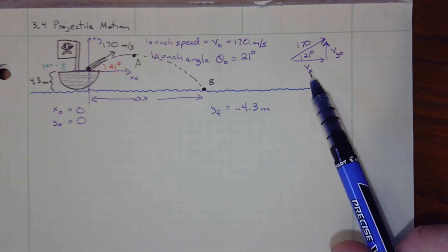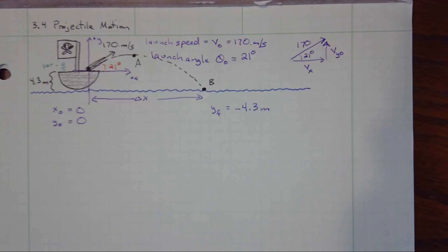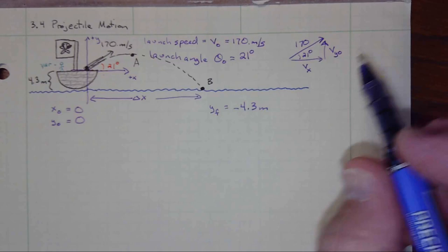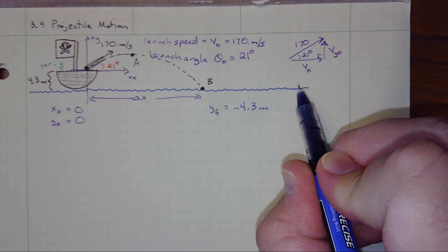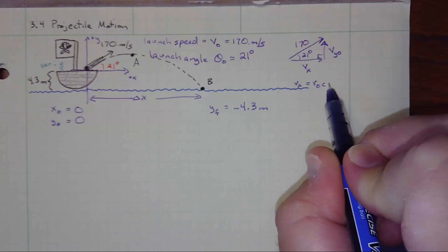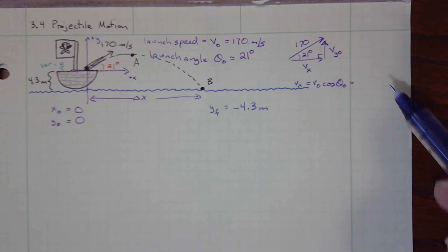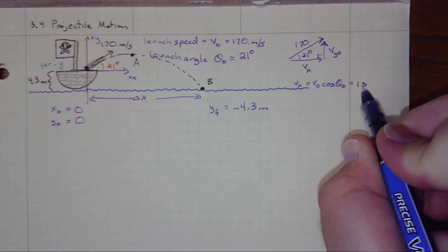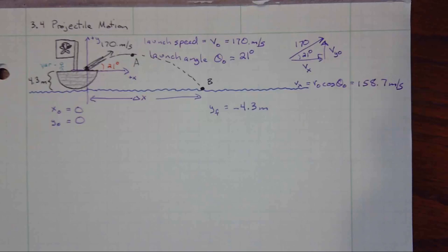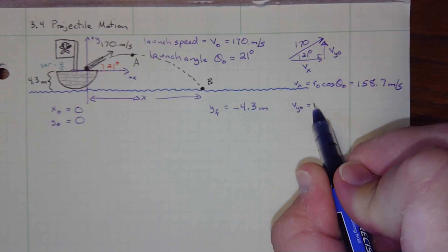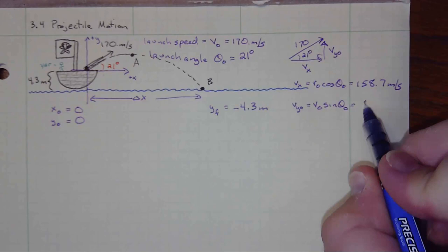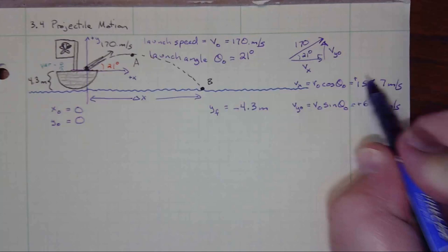Because we've defined this angle relative to the horizontal and have the magnitude, we can use trig to write down our components. We get that vx equals v₀ times cosine of theta₀, so 170 times cosine of 21, which gives 158.7 meters per second — I'll keep some extra significant figures for intermediate values. Then vy₀ equals v₀ times sine of theta₀, which gives 60.9 meters per second. Both of these are positive because the velocity is pointing in the positive x and positive y direction.